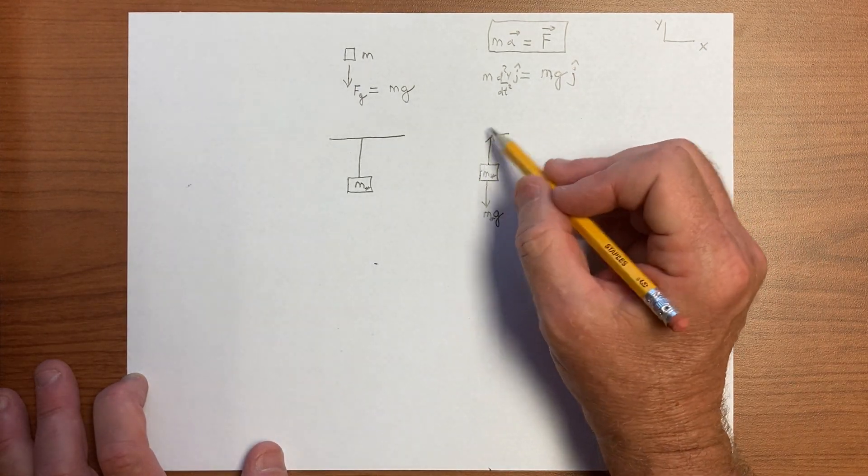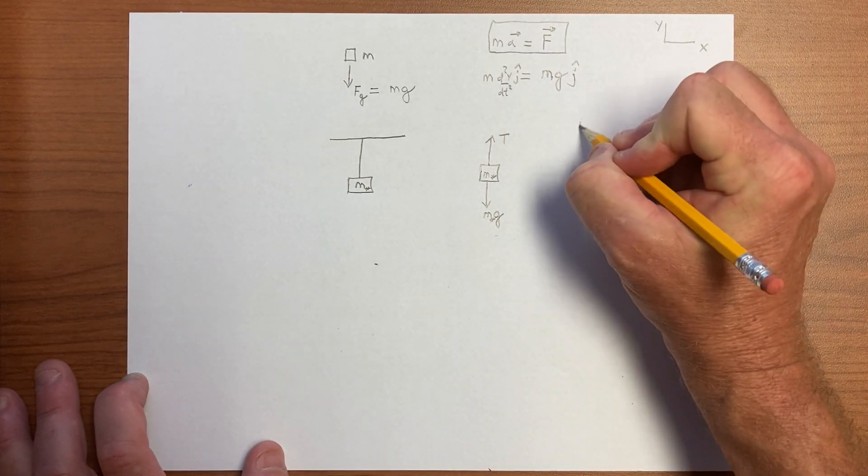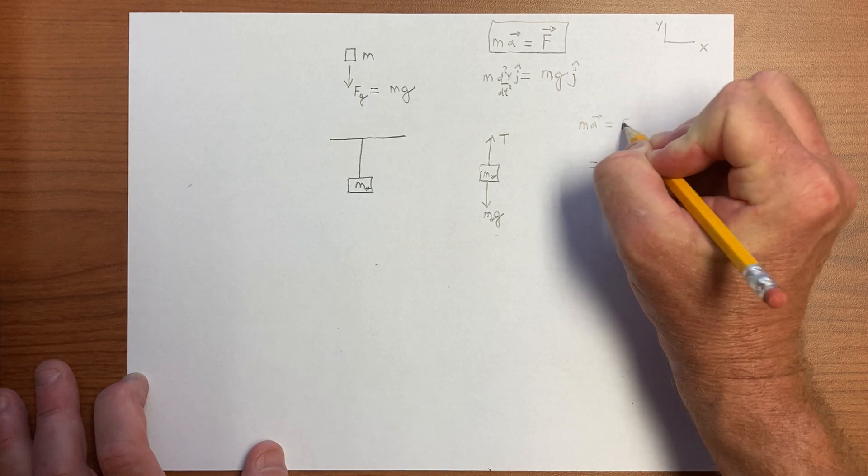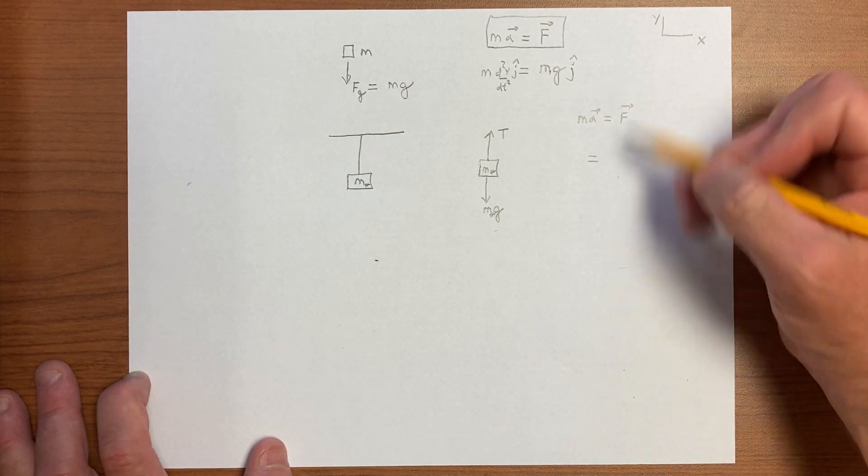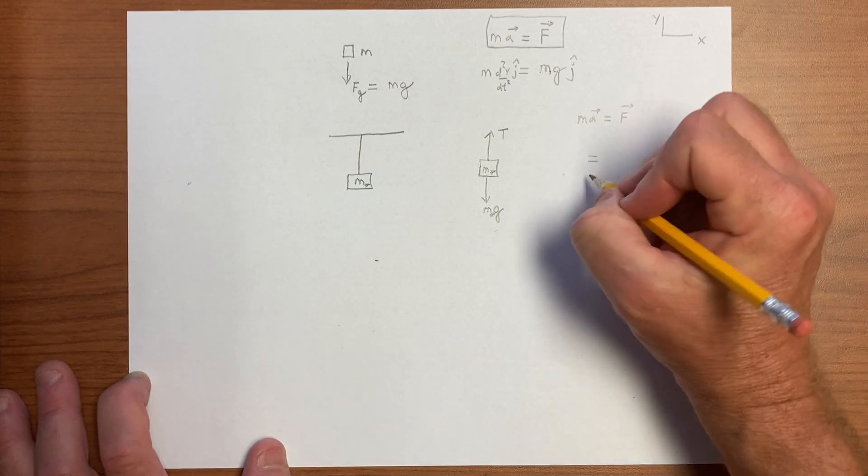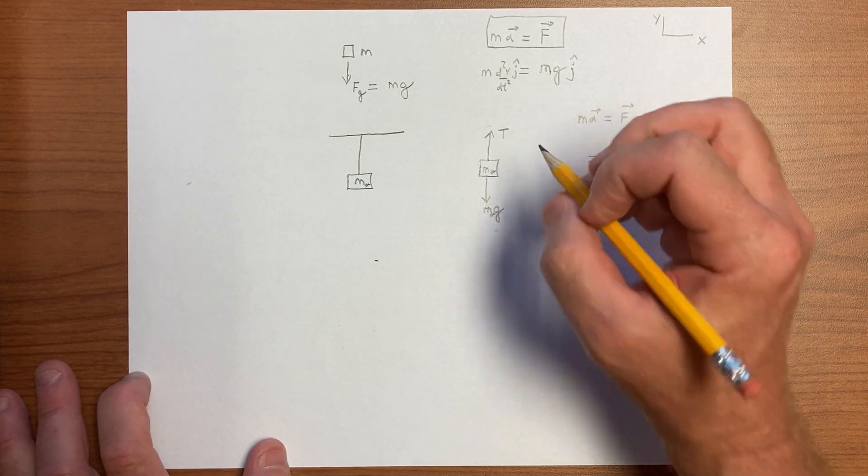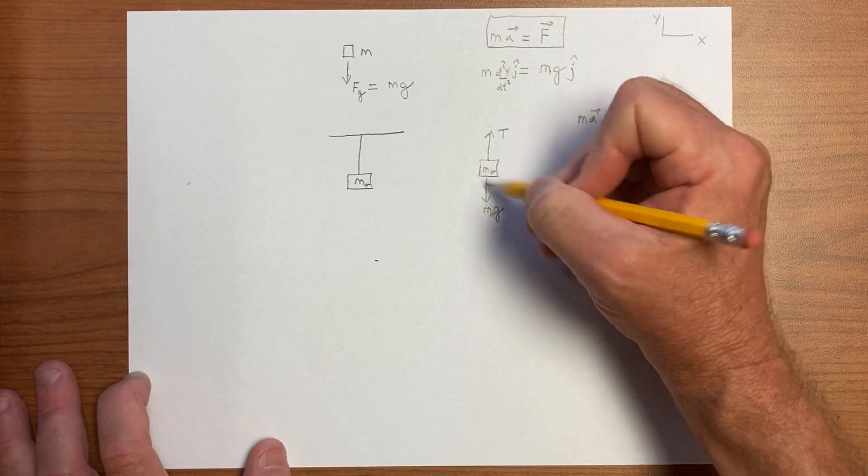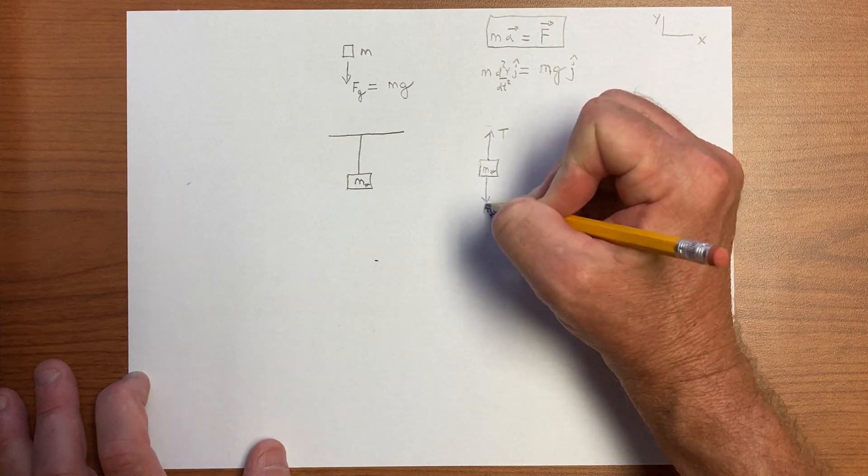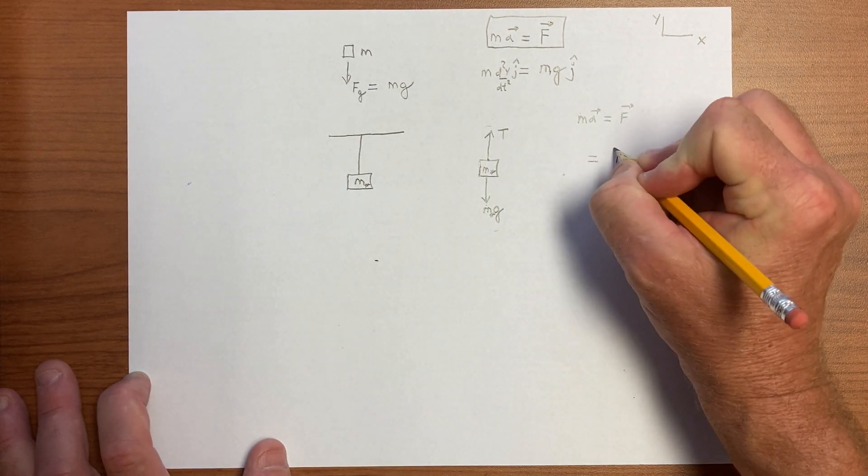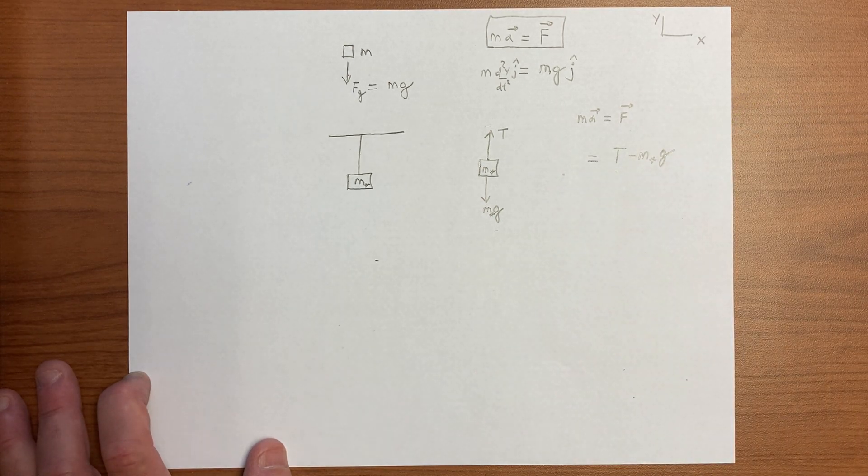And from the free body diagram, we can just read off the forces. So we can construct the right-hand side. We want to apply M A equals F. Now notice that this is a vector equation. But the only interesting component is the vertical component. And so the vertical component has two forces. One is positive and one is negative, or that's a convention. The usual convention is that up is positive, down is negative. And so we'll put the forces in as T minus M star G, and we're done with the right-hand side of M A equals F.